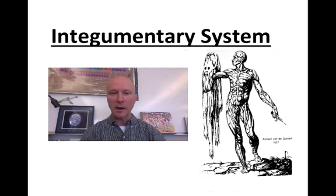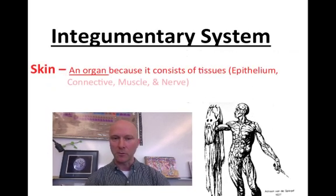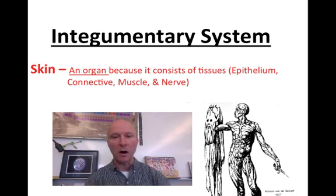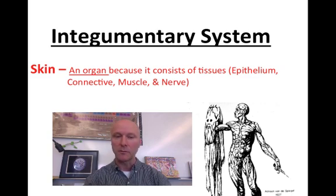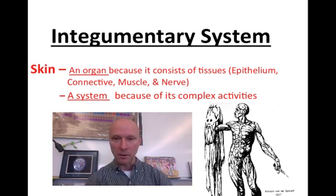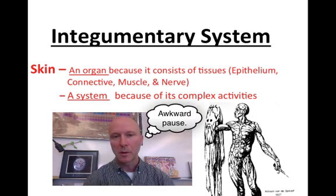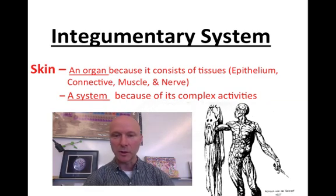Welcome to this screencast introducing the integumentary system. The integumentary system is really just a fancy name for your skin. The skin is considered the largest organ of the body — it's an organ because it has all four major tissue types: epithelium, connective, muscle, and nerve. It's also considered a system in human anatomy and physiology, even though it doesn't have any other organs other than itself, because of its complex activities.